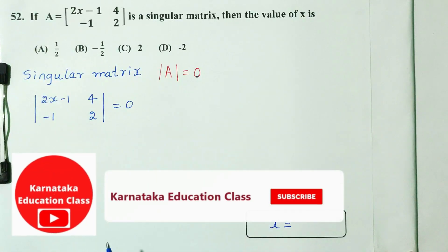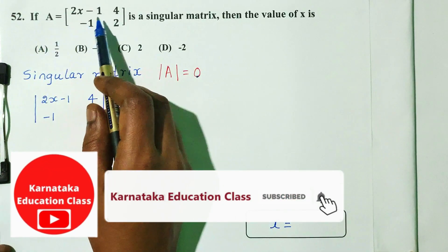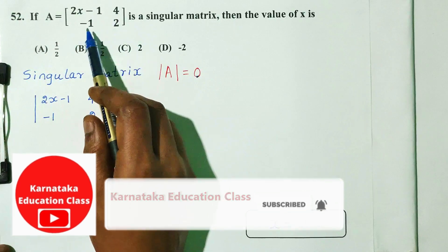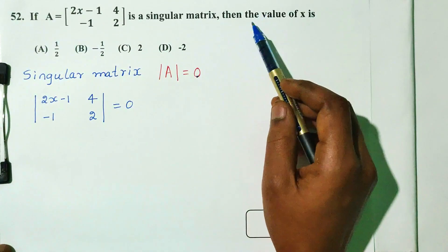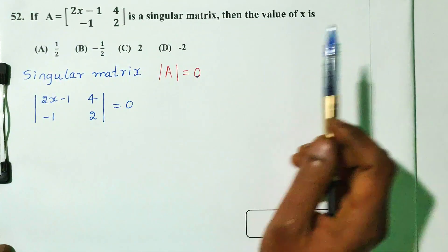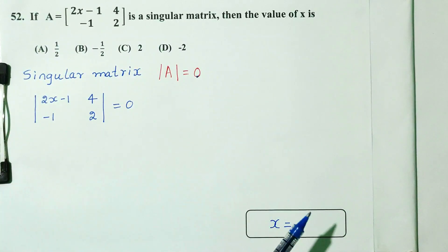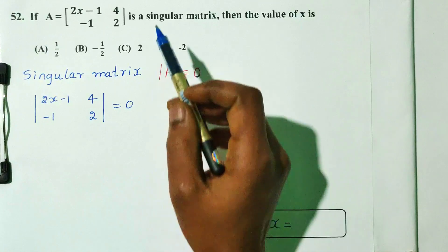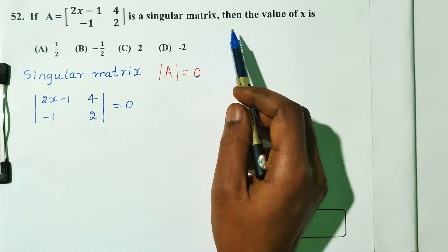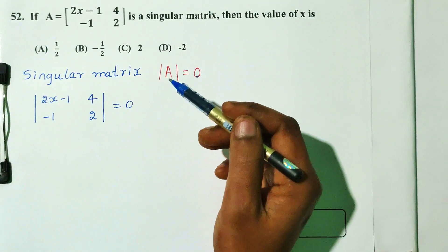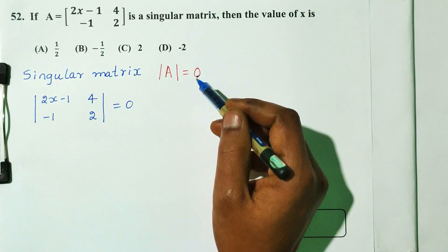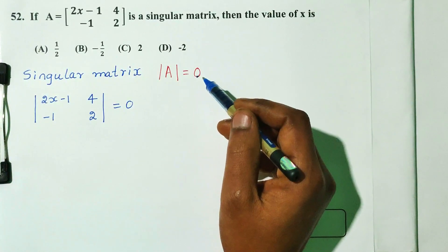Question number 52. If A is equal to the matrix: 2x minus 1, 4, minus 1, 2 — and A is a singular matrix, then find the value of x. There are 4 options. The condition for a singular matrix is: determinant of A is equal to 0.